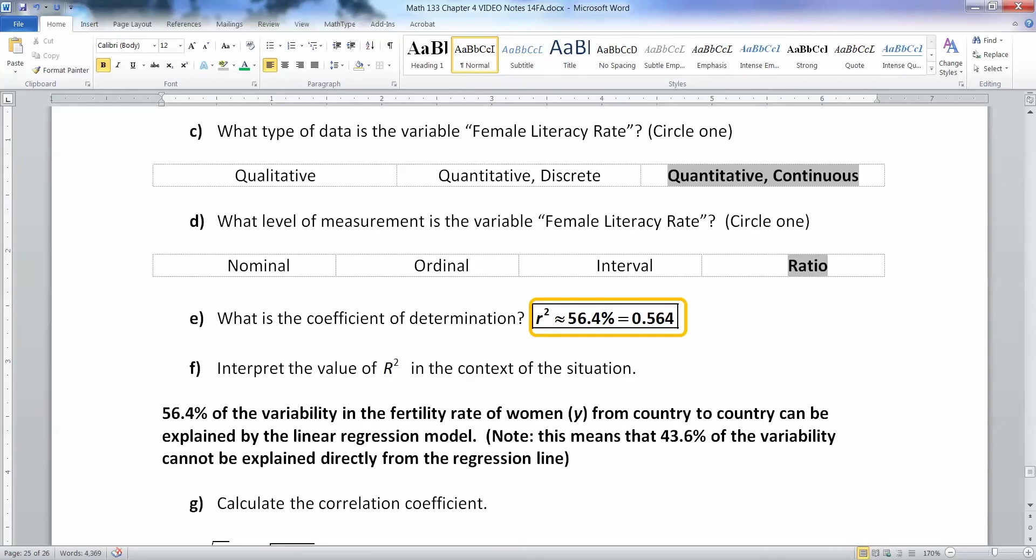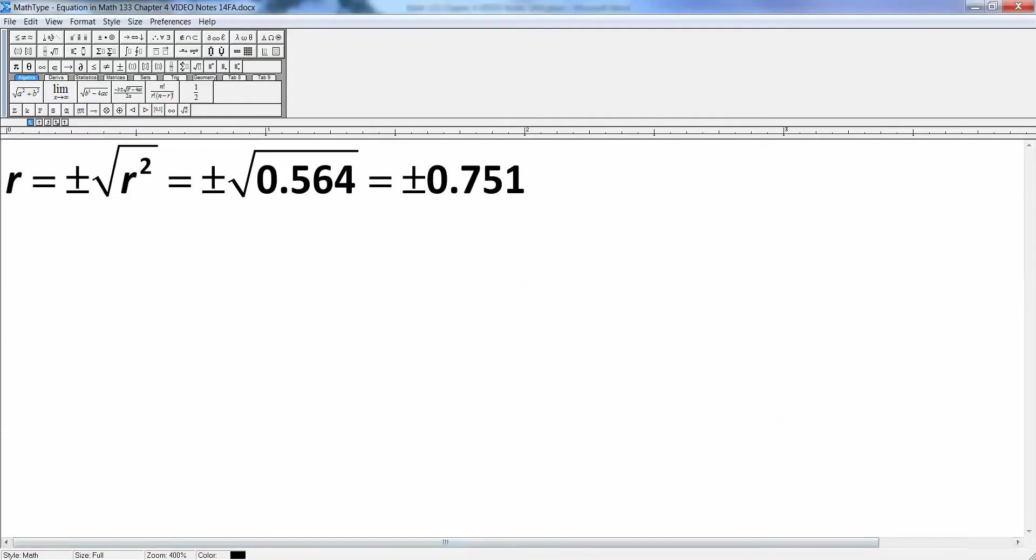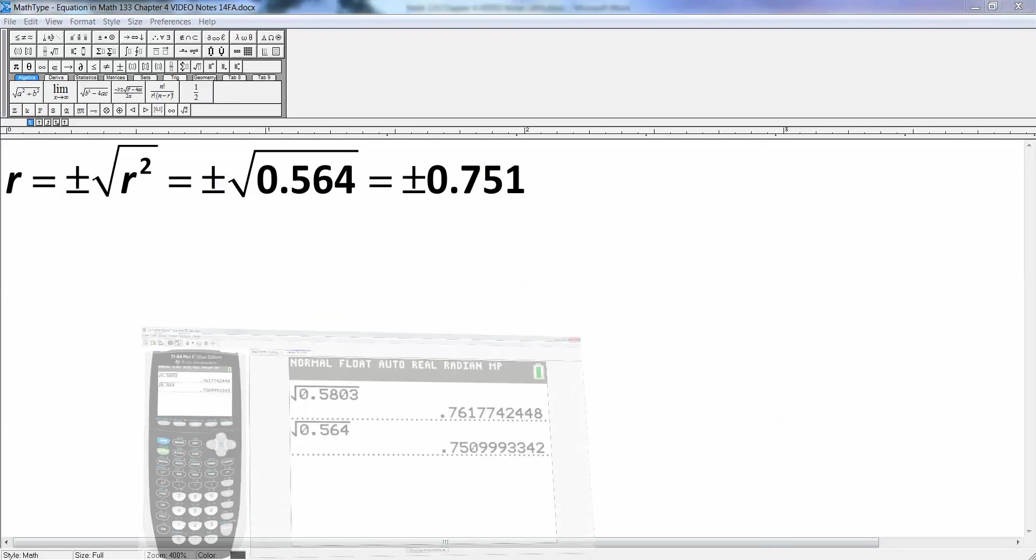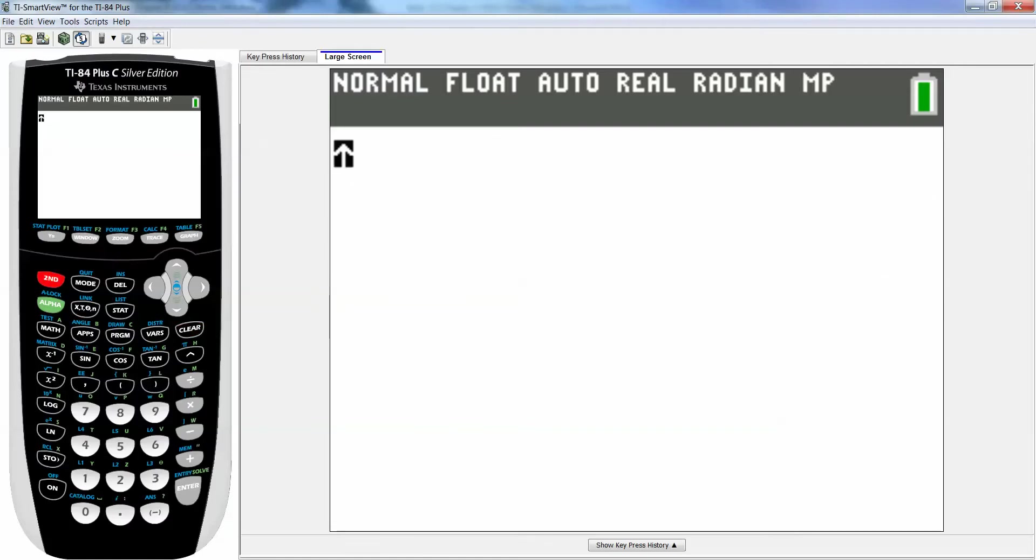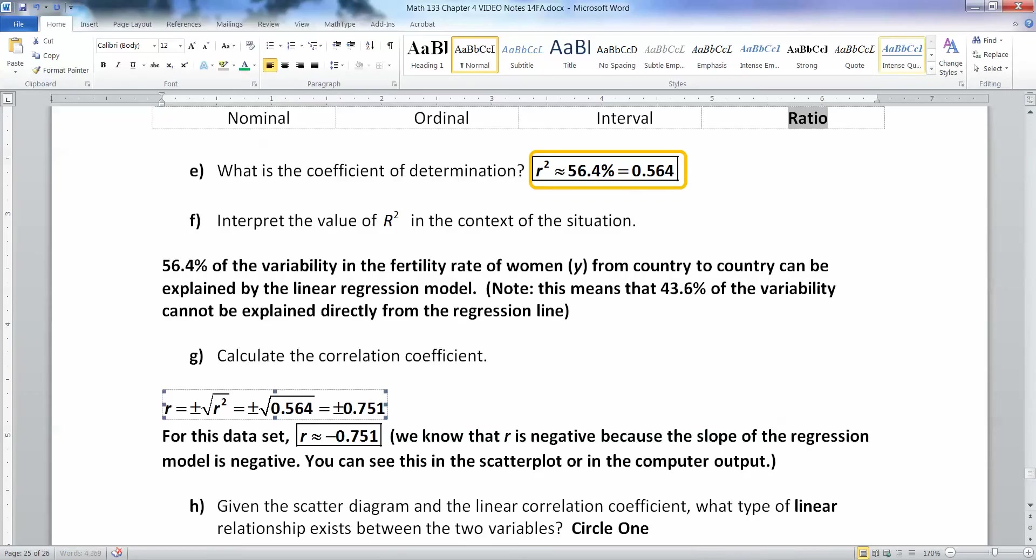Alright. Now we're supposed to calculate the correlation coefficient. Well, remember that you have R squared. So R is either the positive or the negative square root of that R squared value. So R is either the positive or negative square root of 0.564. Make sure you use the decimal here. Don't use the percentage. Convert it to the decimal. And when I use my calculator to do that, second square root 0.564 enter, and I get 0.751. So that's where I got plus or minus 0.751. But I have to make a choice. It can't be both positive and negative. It's got to be one or the other.